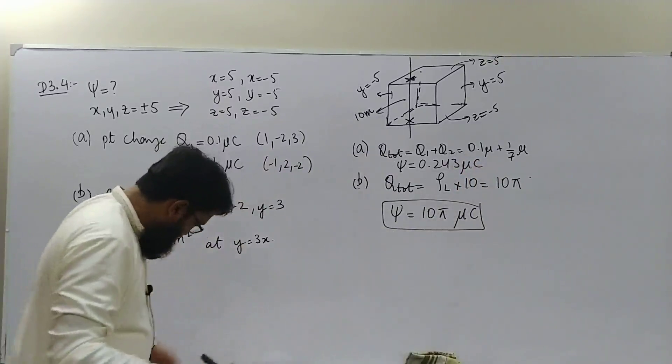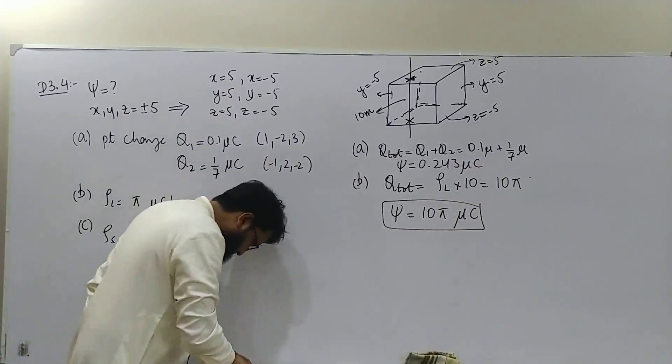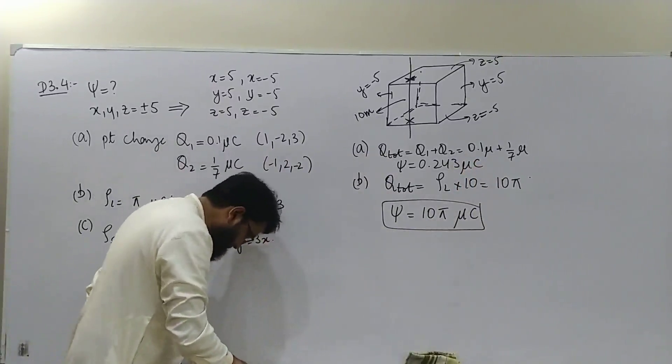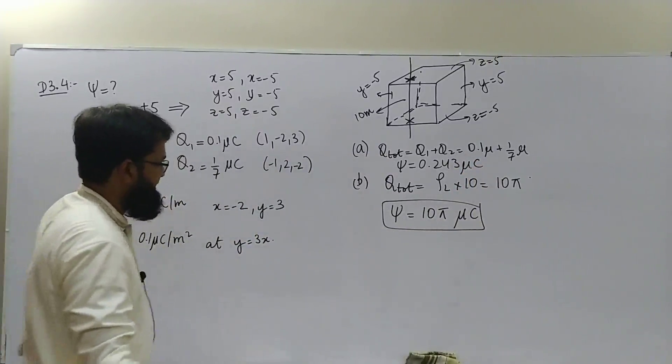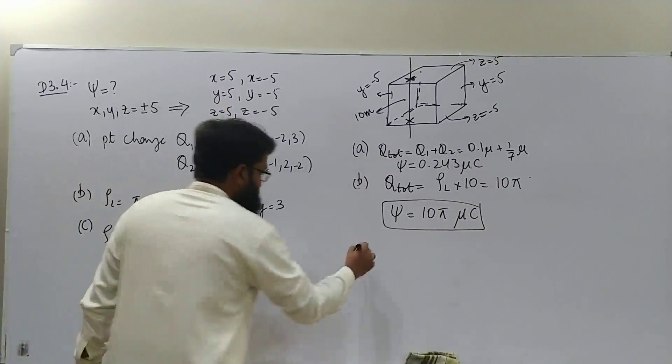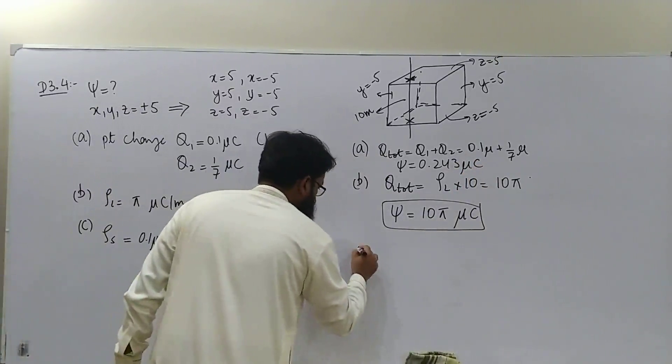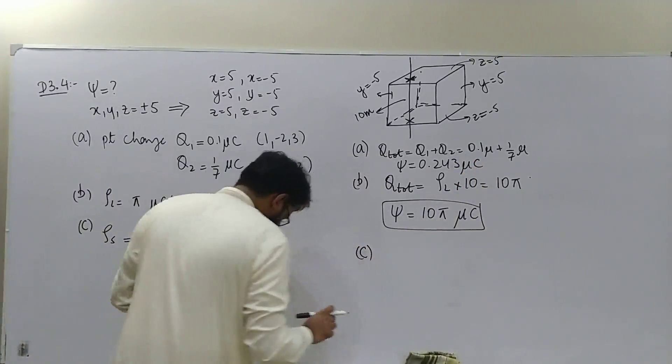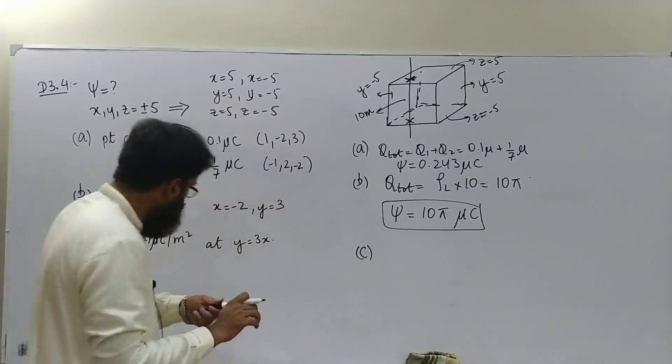The total charge enclosed for part b is ρl × 10 = 10π microcoulombs. The flux is thus 10π microcoulombs, which is approximately 31.4 microcoulombs.